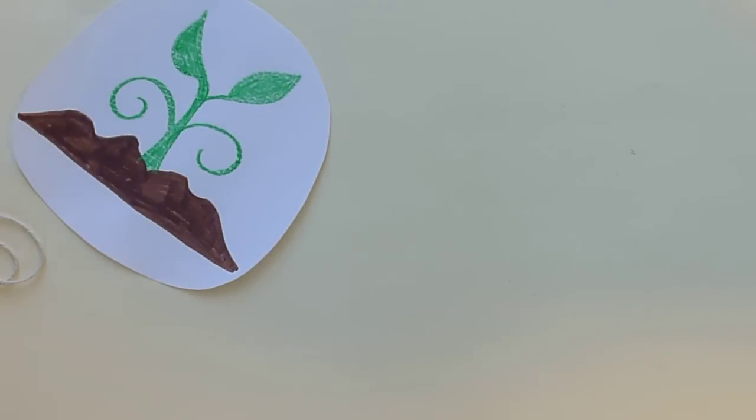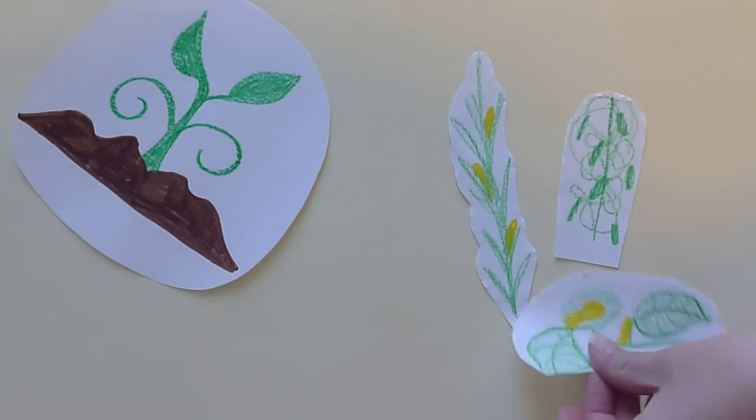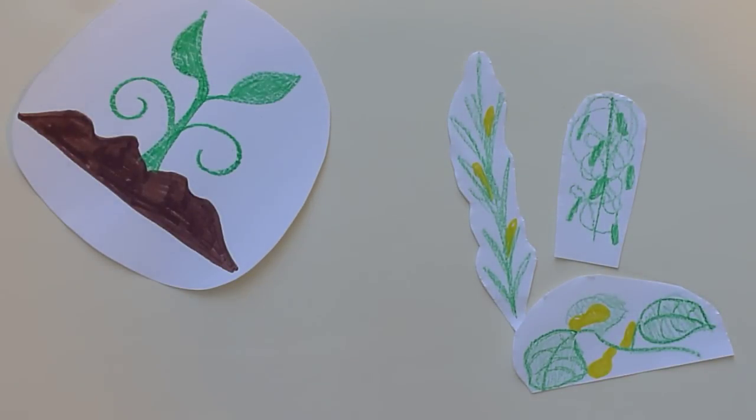In the springtime, the Eastern Woodland Native Americans planted crops to provide food. They relied on the three sisters, not really sisters. The three sisters were corn, beans, and squash. They called them the three sisters because the three plants worked together to help each other grow, just like real sisters would do.